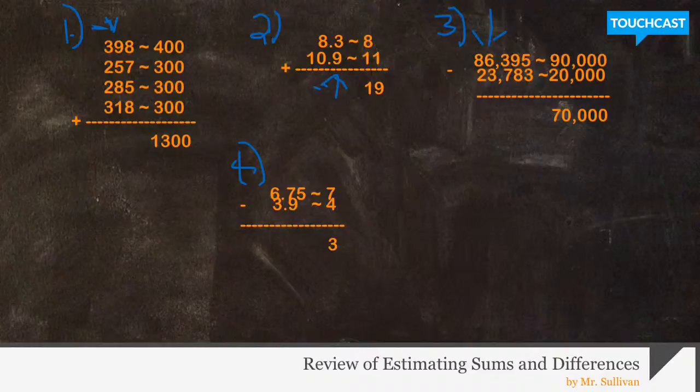And then finally, estimating differences with decimals. 6.75 in example four, we round it to seven. Once again, we look at that second digit. If it's five or greater, we're going to round the whole number up to seven. And if it were to be less than five or four or less, we would keep it the same. 3.9 rounds to four, then you'd subtract seven minus four is three.